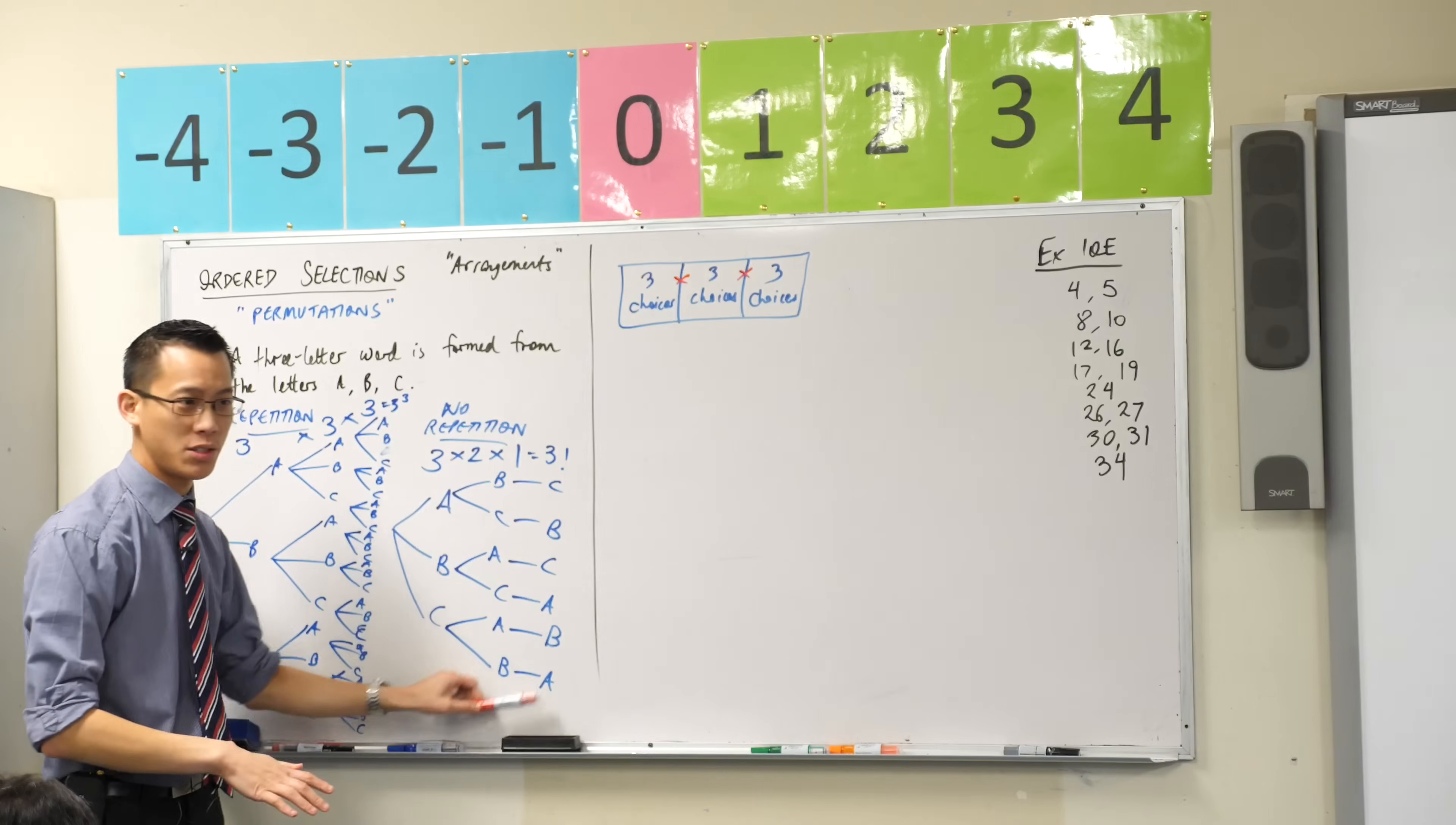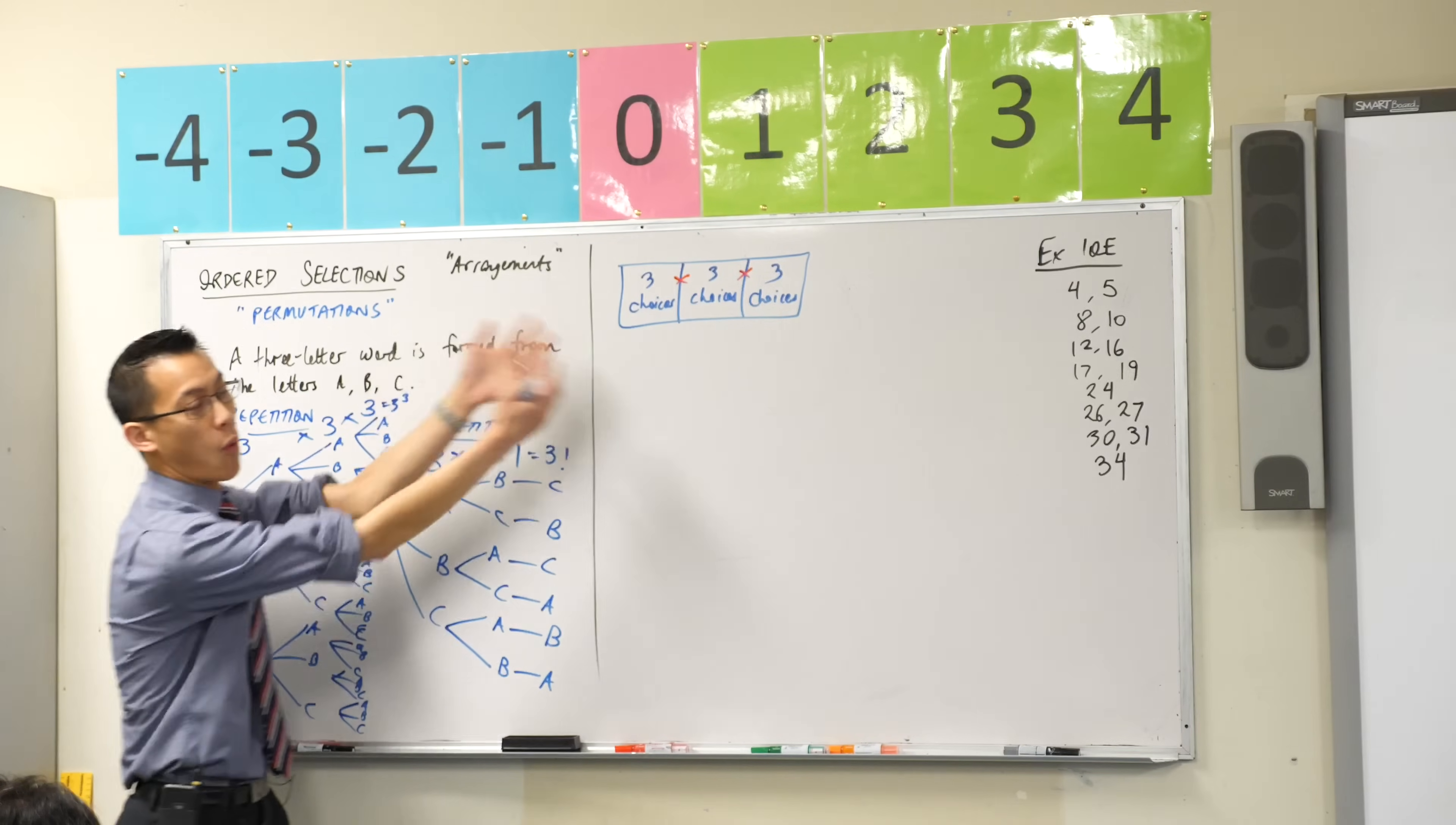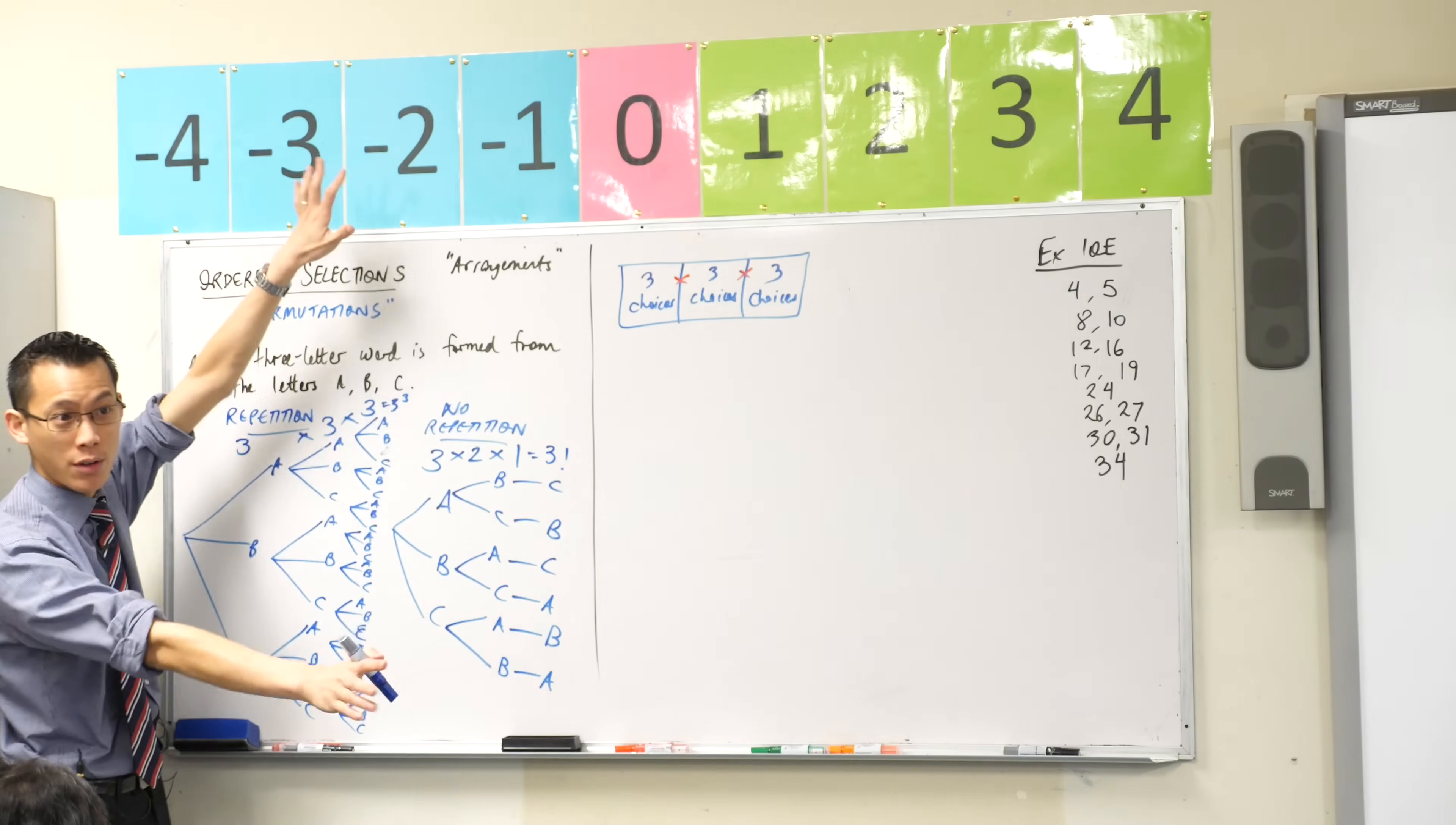But the key that I'm trying to get across to you, why I want us to draw these tree diagrams and make a point of it is, you can see why it is multiplication and not addition. Because each time your branches are branching out further and further and further.